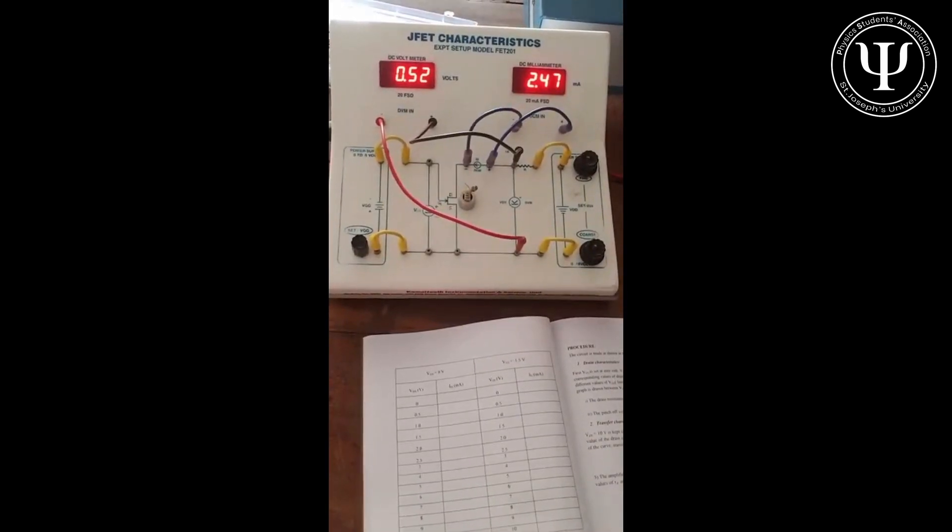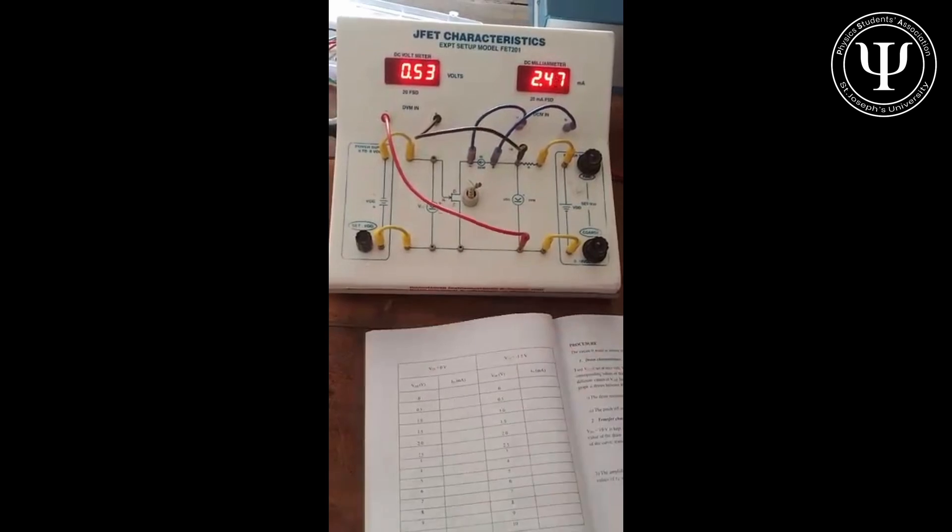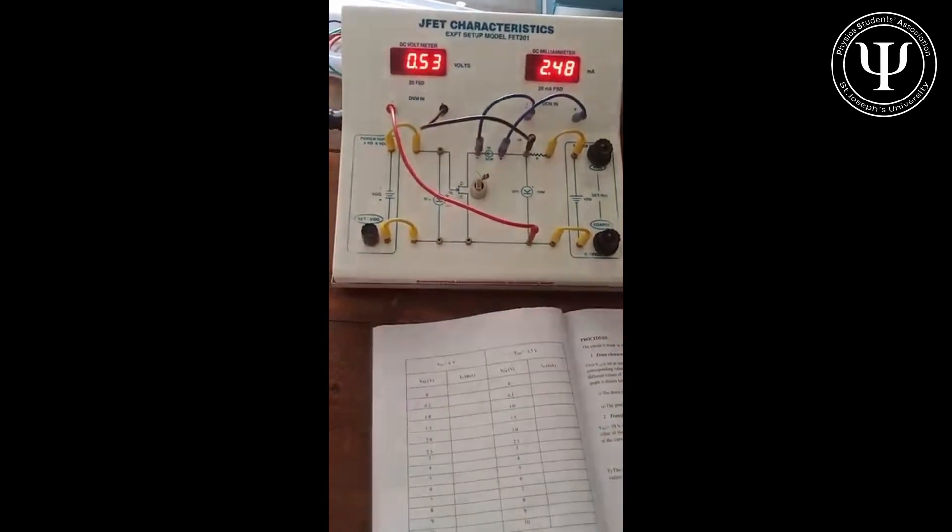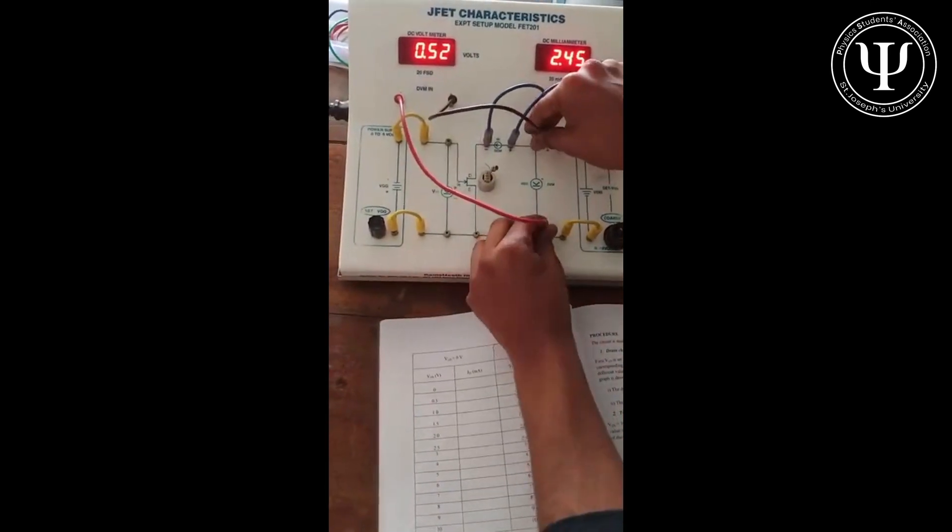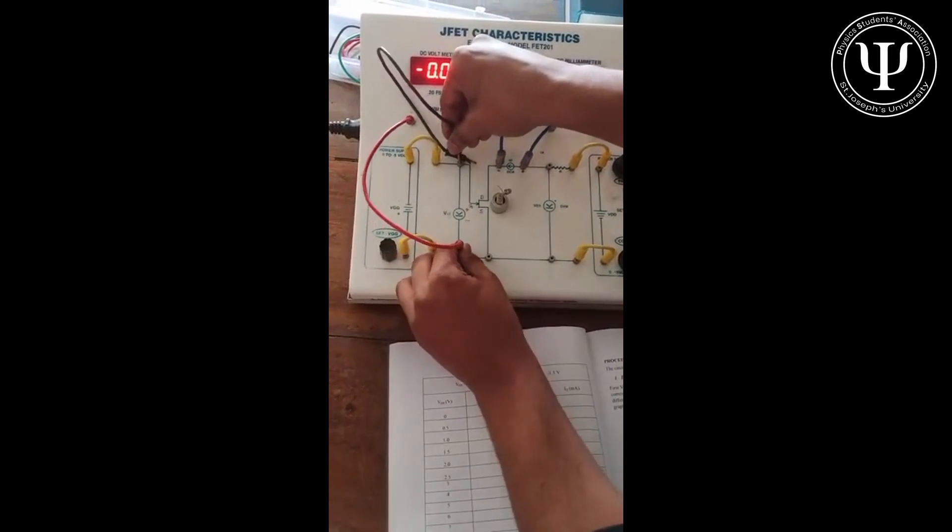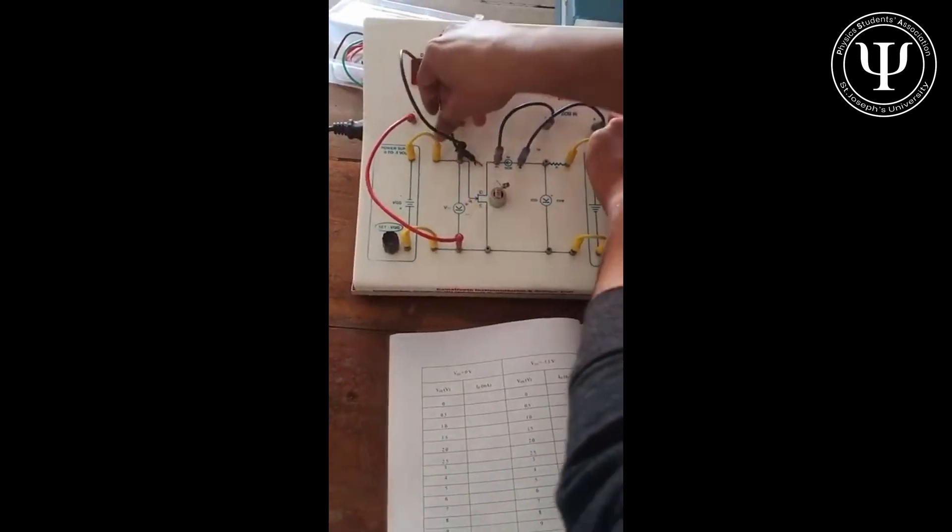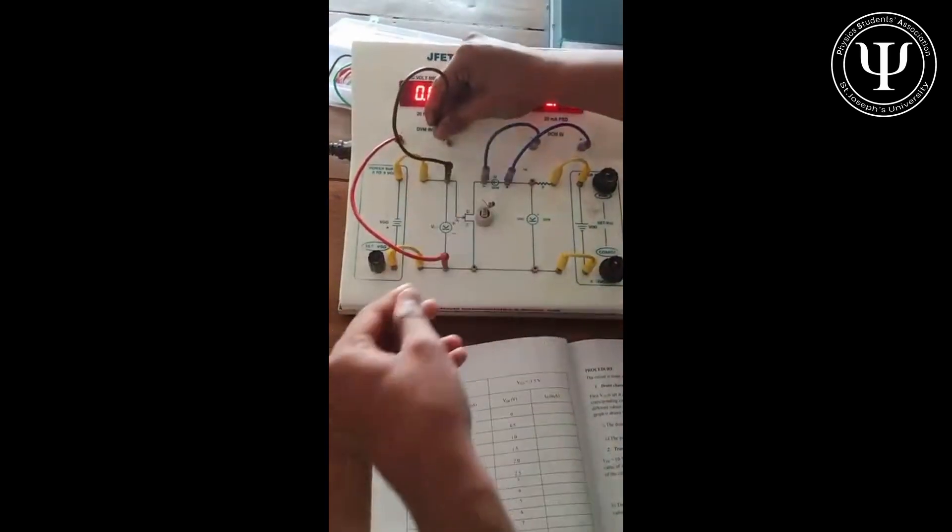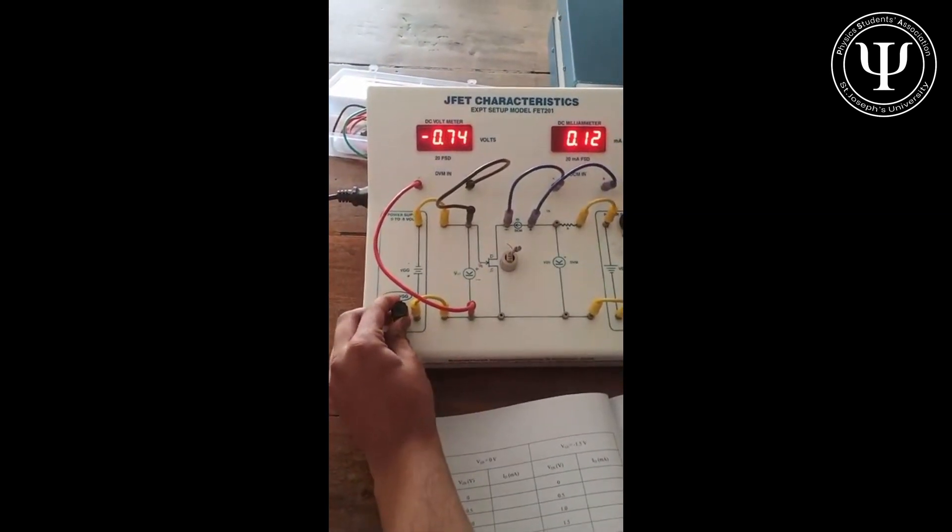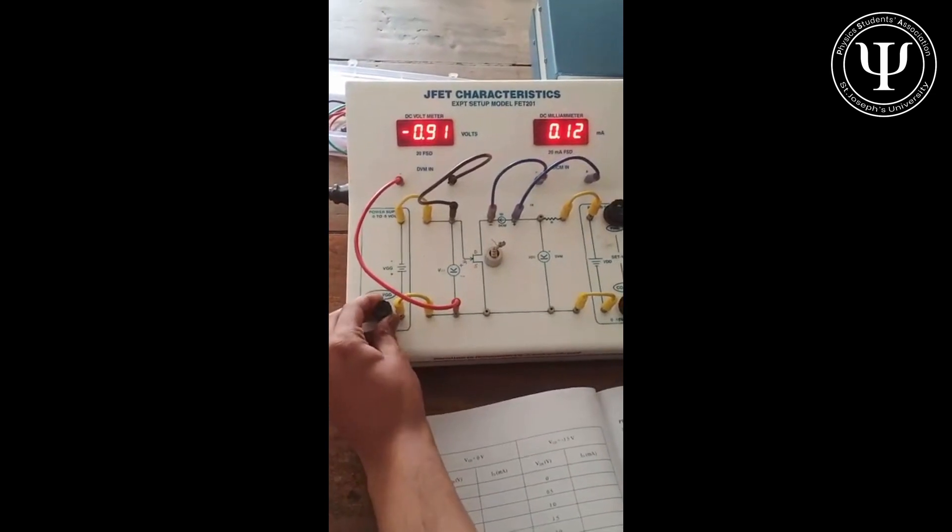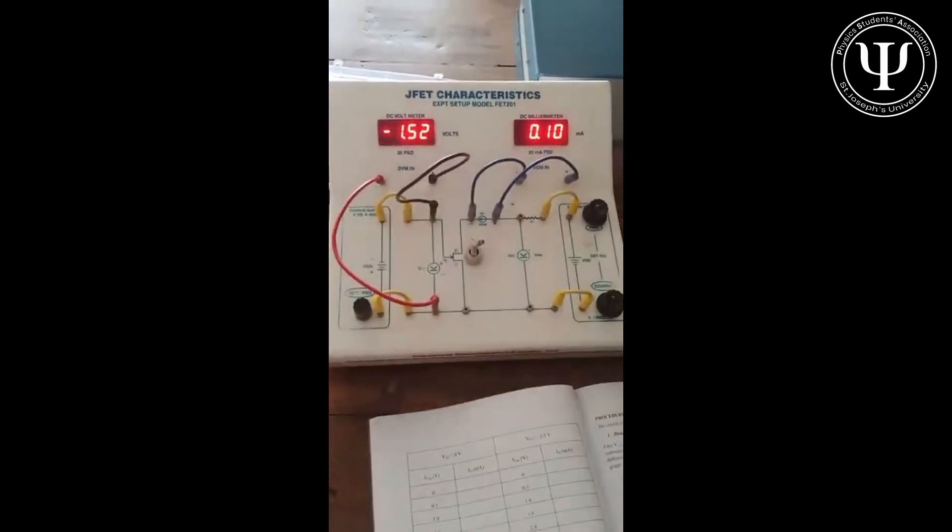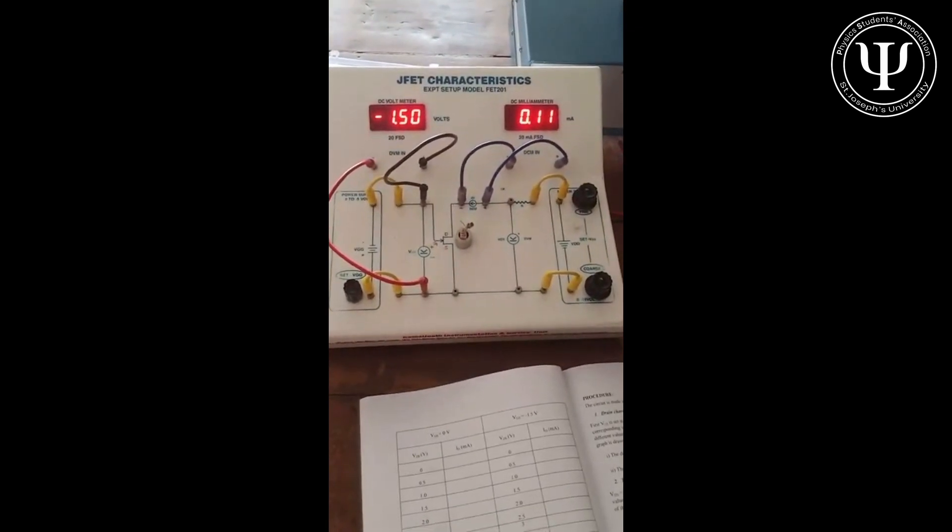So that was setting VGS at 0 volts. Now, as you remember, you need to get another line, so we just set VGS to minus 1.5 volts. So again, we just check it there. Always set the knobs back. VGS was at zero. Now all we need to do is change this knob and set this value to minus 1.5 volts, which, yeah, let's leave it there at 1.5 volts. And now we repeat the same procedure.